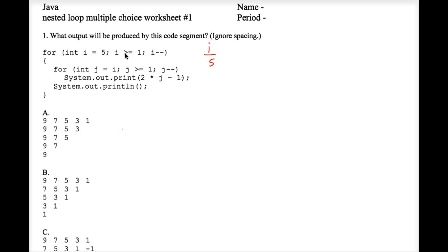The outer loop begins with the value five, which is greater than or equal to one, so we proceed to the inner for loop where we have the variable j. It begins with the value of the variable i, so five is also stored there, and five is greater than or equal to one, so we execute system.out.print.